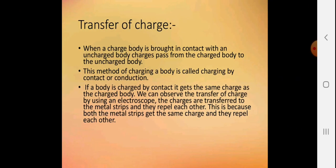Transfer of charge: When a charged body is brought in contact with an uncharged body, charges pass from the charged body to the uncharged body. This method of charging a body is called charging by contact or conduction. If a body is charged by contact, it gets the same charge as the charged body. We can observe the transfer of charge using an electroscope. The charges are transferred to the metal strips and they repel each other because both metal strips get the same charge.